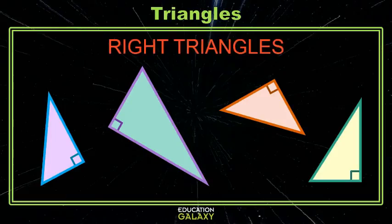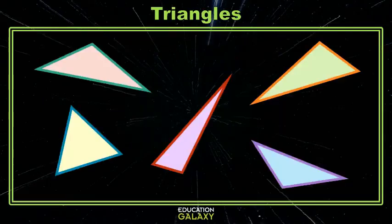But what about all of the other triangles? The ones that don't have a right angle? What do we call them? Are they left triangles? Are they wrong triangles? They're going to be named based on their angle size as well.